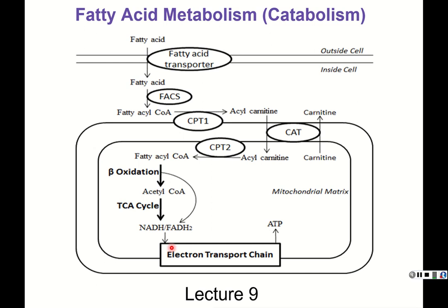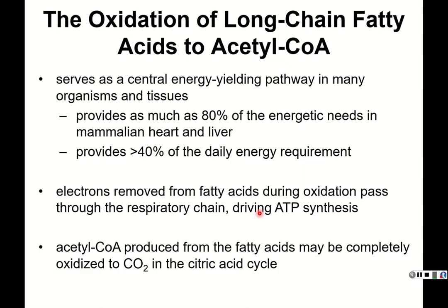Beta oxidation ultimately produces acetyl-CoA, which goes into the citric acid cycle. You also get reduced cofactors — FADH2 and NADH — directly out of that process. All of that funnels into the electron transport chain and the production of a great deal of ATP. The oxidation of long-chain fatty acids generates more ATP than carbohydrates do, making it a very important energy-producing pathway in most higher organisms. It provides the vast majority of energy in certain tissues such as the heart and liver in mammals.